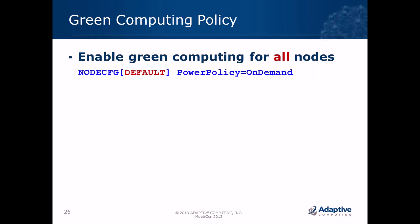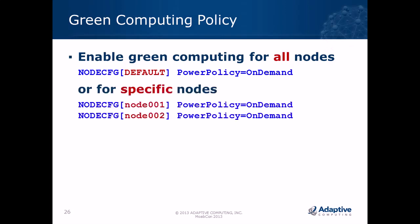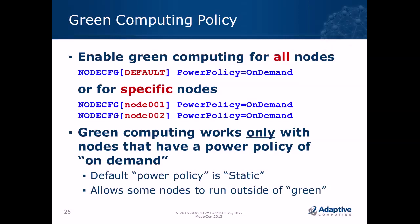To configure green computing in Moab, first enable it through the power policy option on a node configuration. Setting it on the default node configuration enables it for all compute nodes. Power policy has two values: static and on-demand — it must be on-demand to enable green computing. Static is the default. You can also enable green computing for specific nodes only, useful if you want only a percentage of your cluster subject to the green policy.